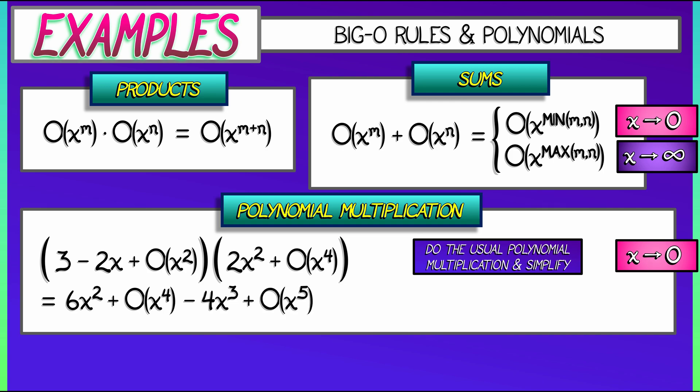When I take that Big-O of x squared, distribute that, I get a Big-O of x to the fourth term, and then a Big-O of x to the sixth. What I'm going to do is pull out the terms of lower degree, that's 6x squared minus 4x cubed. All those other Big-O terms, since I'm in the limit as x goes to zero, it's the minimal power that dominates. That is Big-O of x to the fourth.